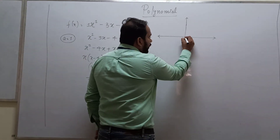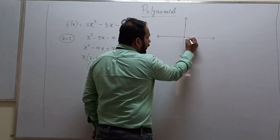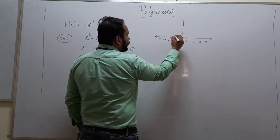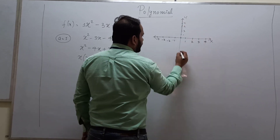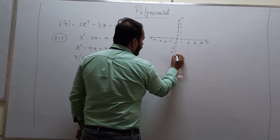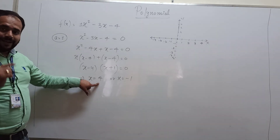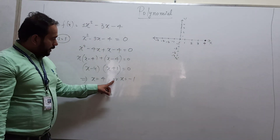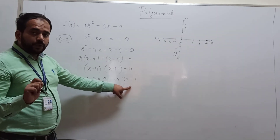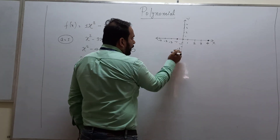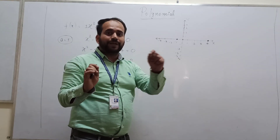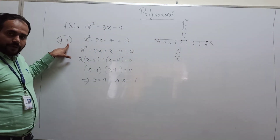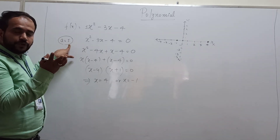Let us look at the graph. This is the origin. On the x-axis we have 1, 2, 3, 4 on the positive side and minus 1, minus 2, minus 3, minus 4 on the negative side, and similarly on the y-axis. The first point is x equals 4, y equals 0, which lies here. The second point is x equals minus 1, y equals 0, which lies here. We have two solutions, so the graph cuts the x-axis at two points. Since a is positive, we draw a parabola opening upward.